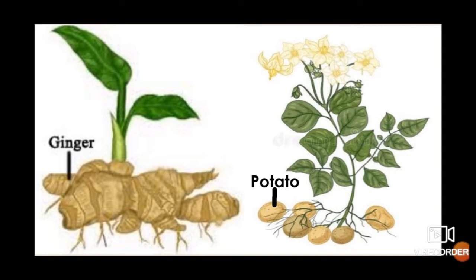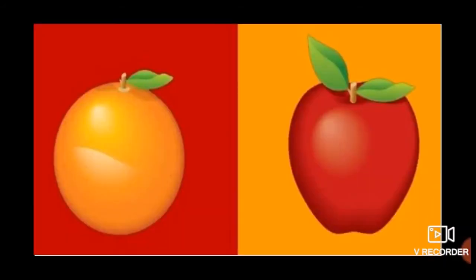Stems of some plants are swollen and juicy due to stored food. These stems are eaten as food. Stems of potato, ginger, turmeric and sugarcane are modified to store food in them. Fruits contain seeds in them.